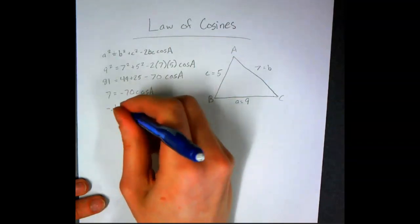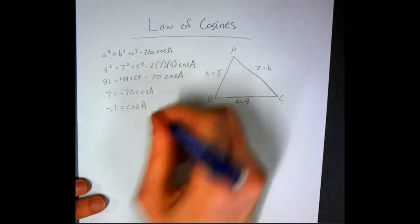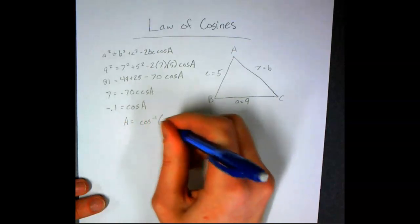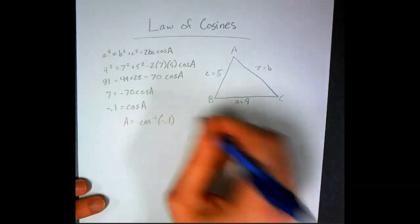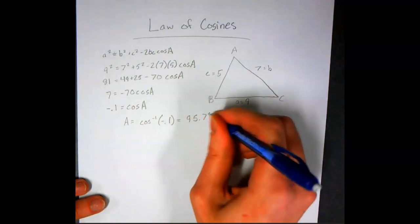We'll have negative 0.1 equals cosine of a. We're going to say a is the inverse cosine of negative 0.1, and that's going to equal just about 95.7 degrees.